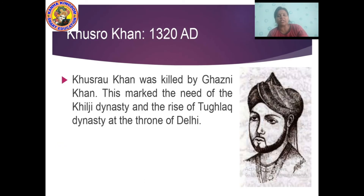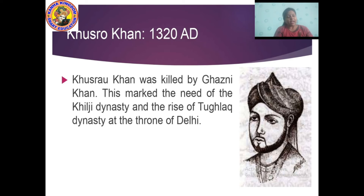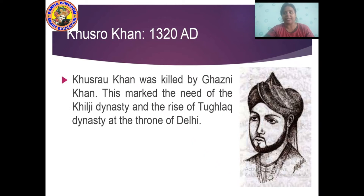After Alauddin Khilji, Khusro Khan came into the Khilji dynasty, but Khusro Khan was killed by Ghazi Malik. This marked the end of the Khilji dynasty and also the rise of the Tughlaq dynasty in Delhi. So after the slave dynasty came the Khilji dynasty, and now after the Khilji dynasty, the Tughlaq dynasty came into existence in the Delhi Sultanate.